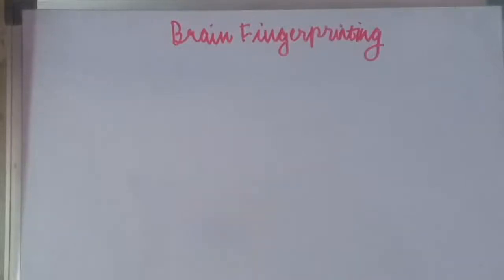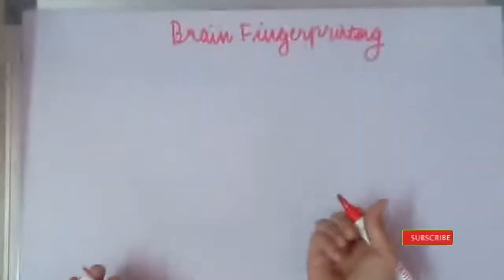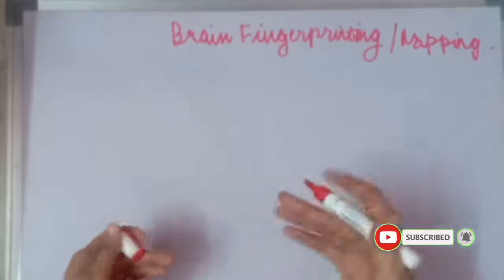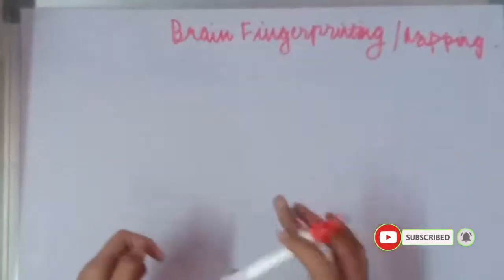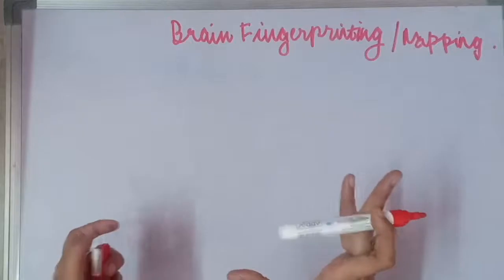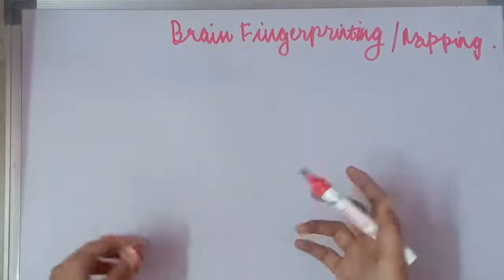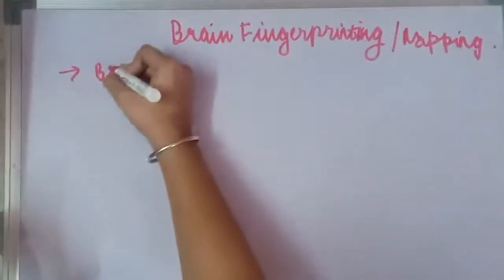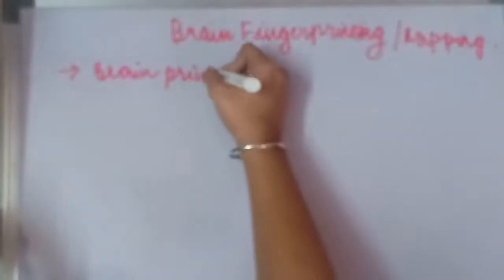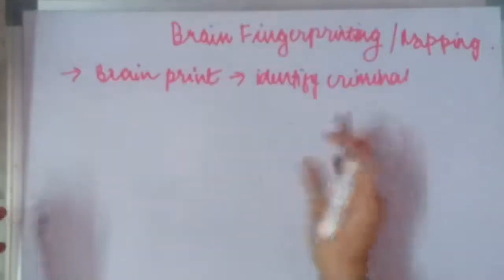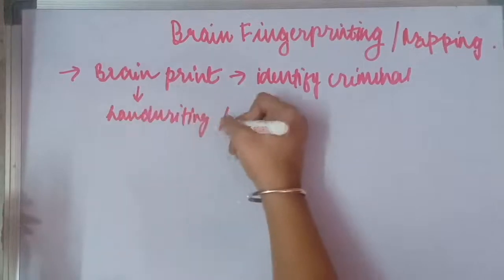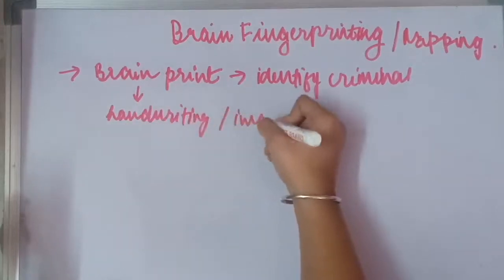Hi everyone, today's video topic is going to be brain fingerprinting. This technique has another name, brain mapping. It is a technique that is used to identify criminals on the basis of the brain print that is formed when a particular kind of image or writing is shown to them. This happens when a particular kind of handwriting or image is shown to the culprit.